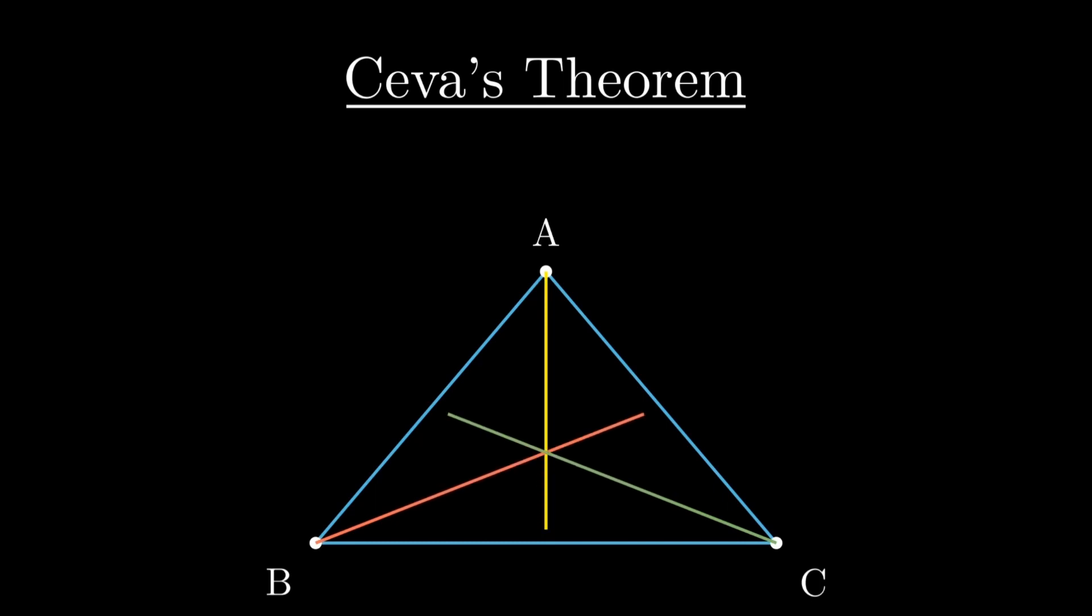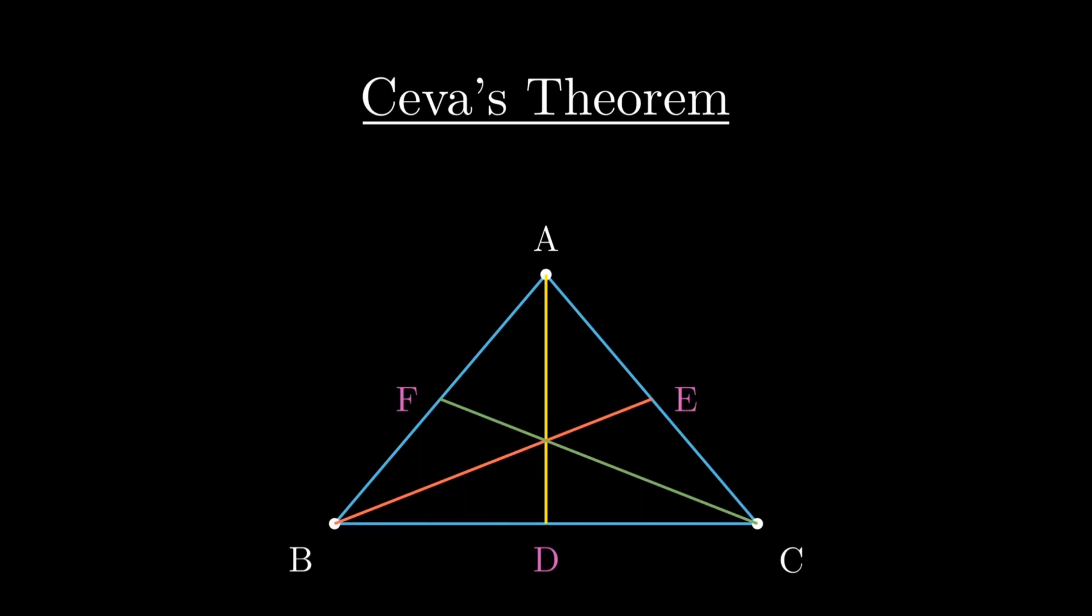So let's take triangle ABC and draw AD, BE and CF from the vertices of the triangle to the opposite sides. Now if these lines are concurrent, that is they pass through the same point, then BD by DC into CE by EA into AF by FB equals 1.